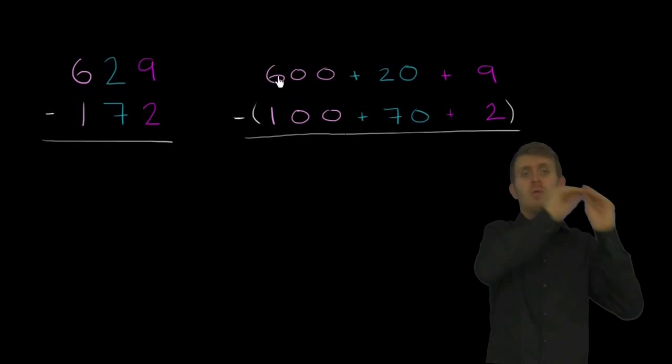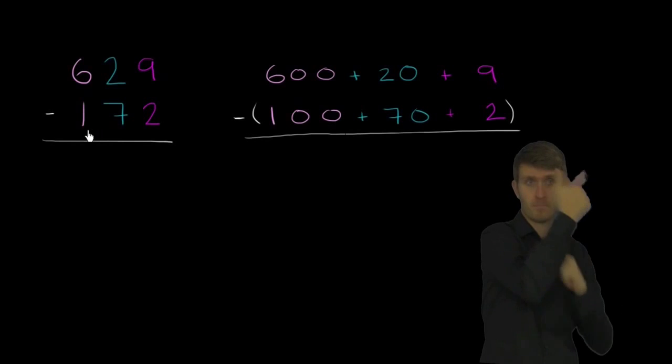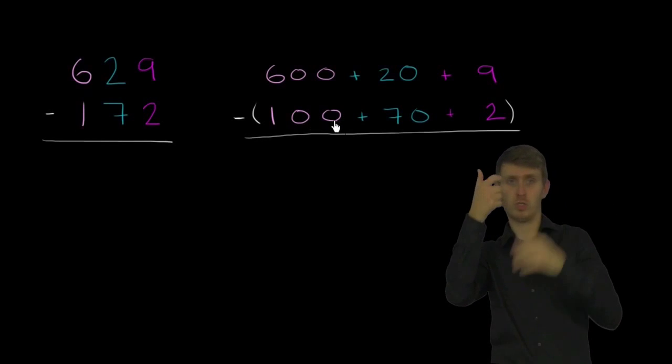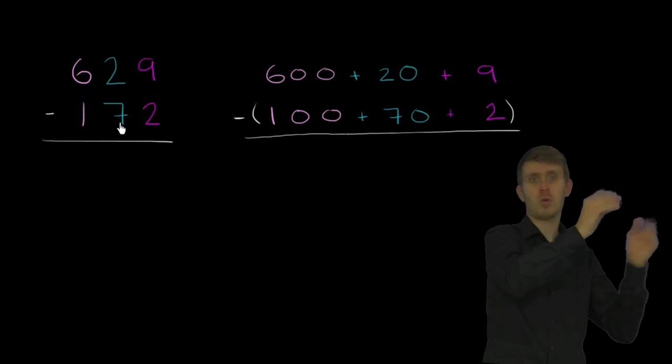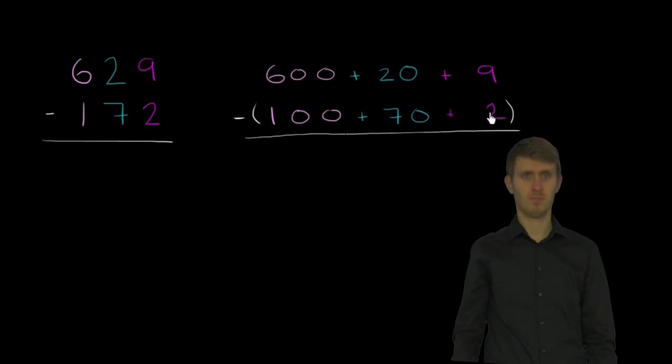I wrote 629 as 600 plus 20 plus 9. And I rewrote 172. The 1 is 100, so that's there. This is 7 tens. It's in the tens place, so it's 70. And then the 2 is 2 ones, so it just represents 2.